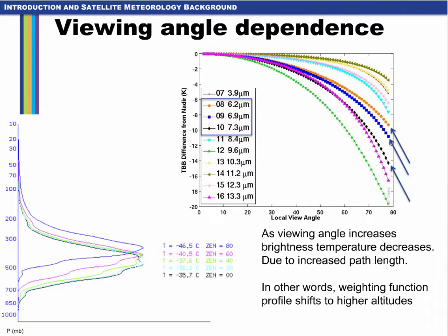For clear sky conditions, the brightness temperature varies with viewing angle for the three ABI water vapor bands. In the plot on the right, ABI bands 7 through 16 dependency on viewing angle is shown, and you can see it varies between the different bands with the most sensitivity with the 9.6 micron ozone band and the least sensitivity with the 11.2 micron IR band. This would be important to know in an RGB that uses several bands, since the image colors might change with view angle but the atmosphere does not. Here we're primarily interested in the three ABI water vapor bands, which I've highlighted with a blue box in the legend and the arrows pointing to the three curves.